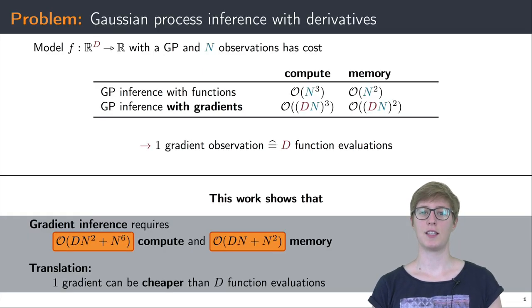Let's consider a standard Gaussian process regression task. We want to learn a mapping from d-dimensional input to a scalar output using n evaluations of the function f. Standard GP inference has the well-known scaling that is cubic in the number of evaluations n for computation and quadratic in memory.